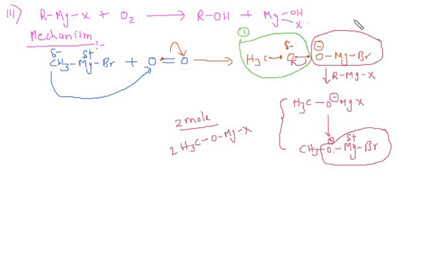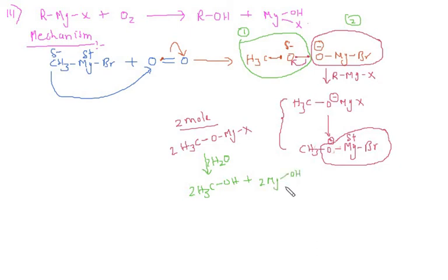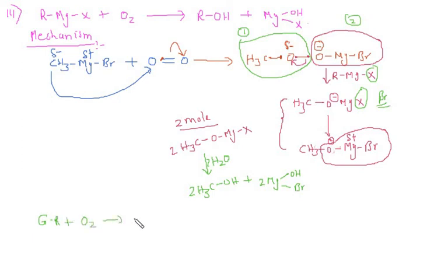Both these intermediates on reaction with water further form alcohol plus two moles of the by-product. The halogen here is Br, so the by-product is MgBrOH. So in summary, whenever a Grignard reagent reacts with oxygen, it always forms alcohol.